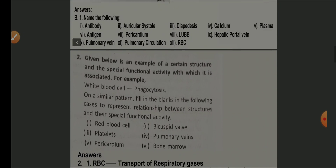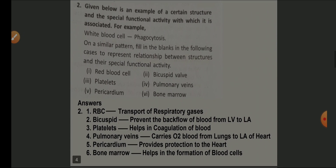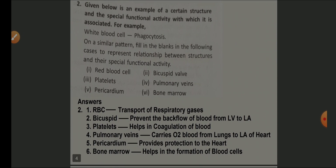Question number two: given below is an example of a certain structure and its special functional activity. For example, white blood cell — function is phagocytosis. According to this format, we solve the given questions. RBC — function is to help in the transportation of respiratory gases.